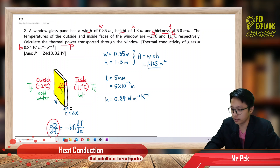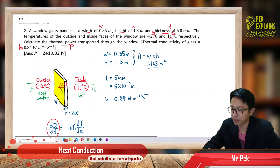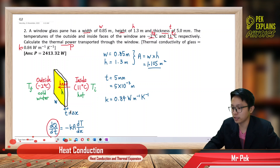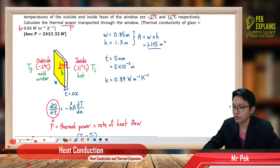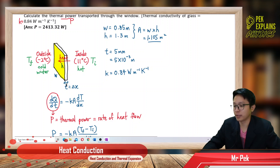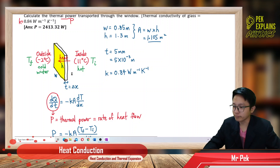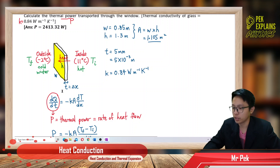The thickness is the distance of heat flow. The heat flows from inside of the house to outside of the house, so the thickness is actually X — the distance between the two temperatures. The thickness of the window is X, the distance between the initial temperature and the final temperature.